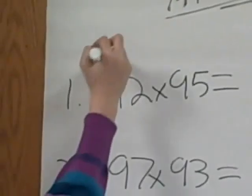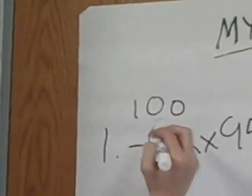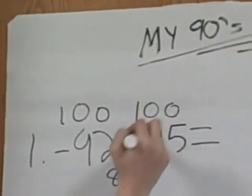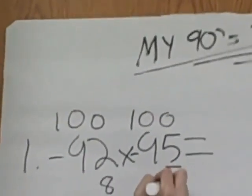We are going to do a 90s check. We first do 100 minus 92 and we get 8. 100 minus 95 and you get 5.